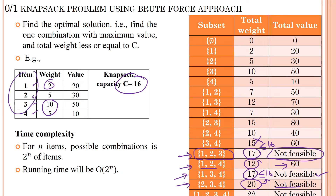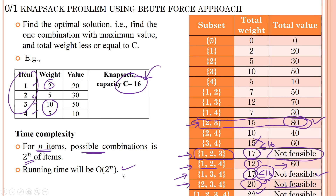Selecting all four products gives weight 22, which does not satisfy the given criteria since the knapsack capacity is 16 — so this is also infeasible. Among all feasible solutions, the best is a profit of 80 from the combination of items 2 and 3. This is the best solution, with a discount value of 80 units. For n items the total possible combinations is 2^n, so the time complexity is O(2^n).